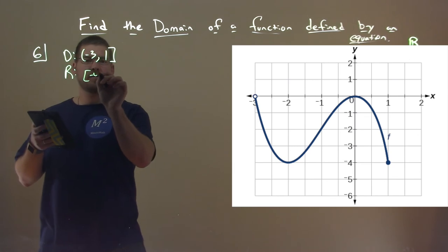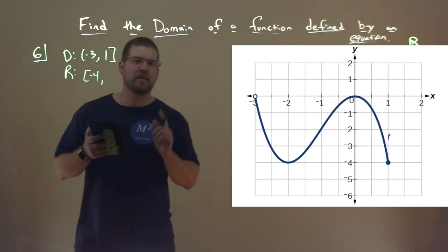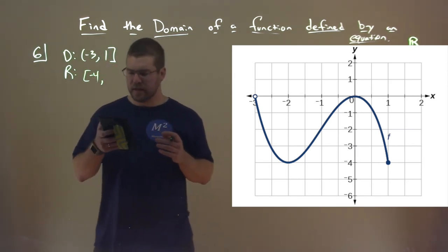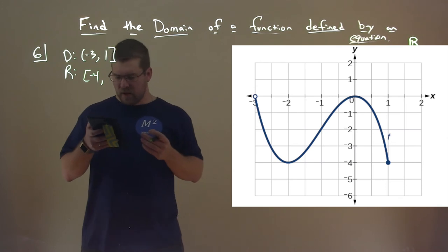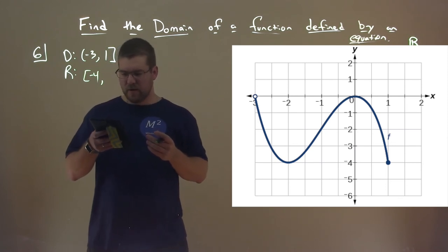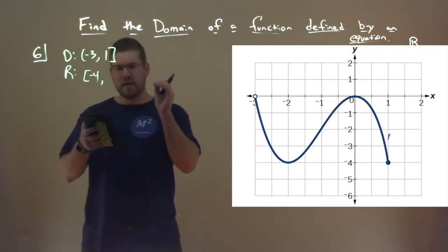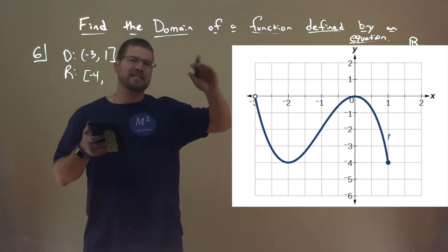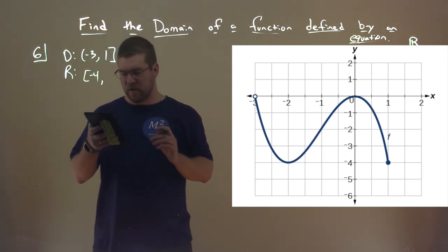So the lowest value is negative 4, and the highest value is a bit tricky — it's kind of up to interpretation from the image. The range has a closed circle at the beginning at 0, and on the right it looks like it hits the graph right at the top, also at 0.